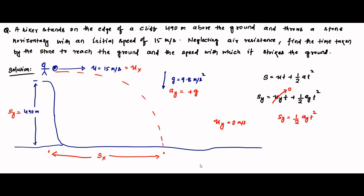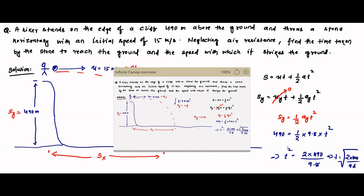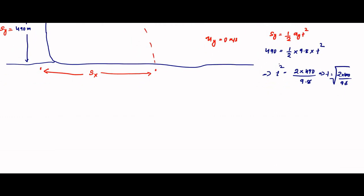We have Sy = 490 meters and Ay = 9.8 meters per second squared, so: 490 = ½ × 9.8 × t². That implies t² = 2 × 490 ÷ 9.8 = 980 ÷ 9.8 = 100. Therefore t = √100 = 10 seconds.